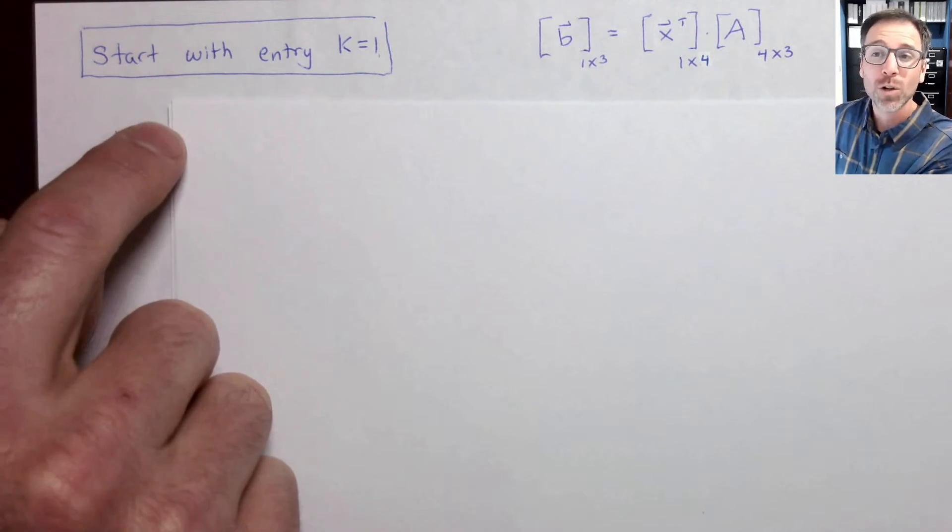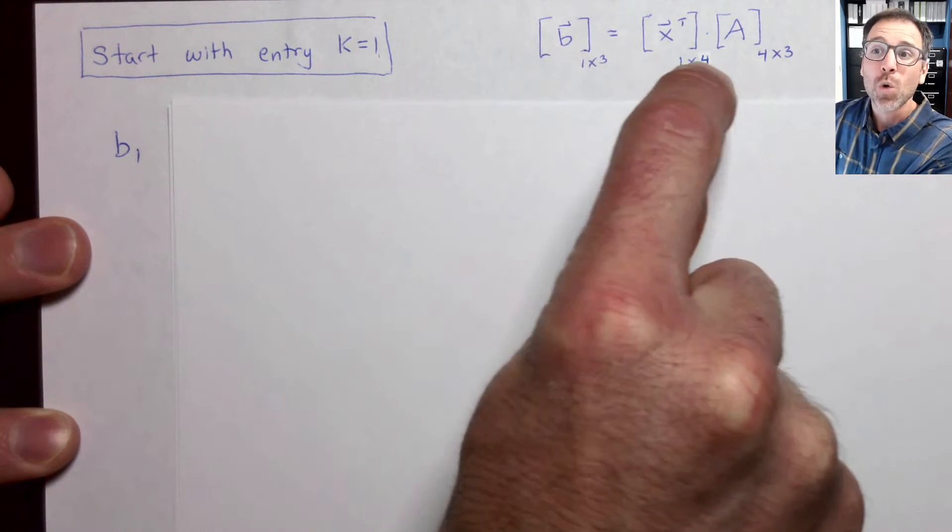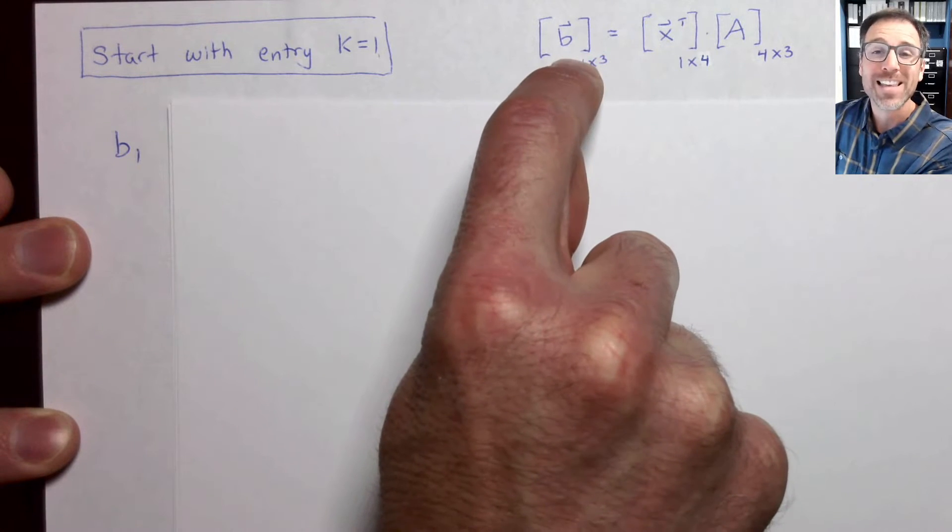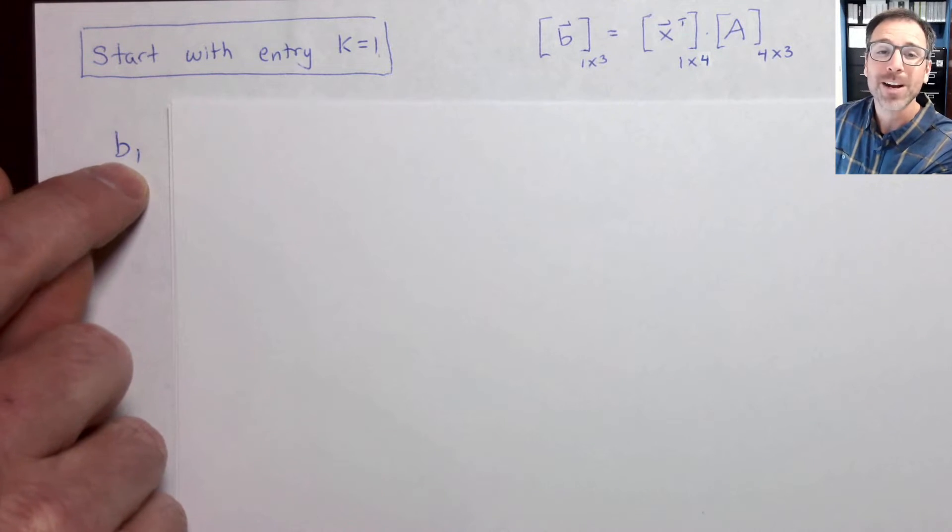Now that we have the general approach, let's go ahead and find all individual entries using this definition. We knew that A was 4 by 3, x was 1 by 4, which means the output vector b that we're looking for is a 1 by 3. So if we use this, we're going to do three separate entries.